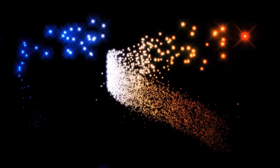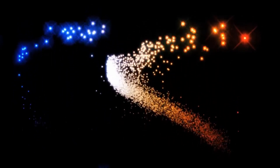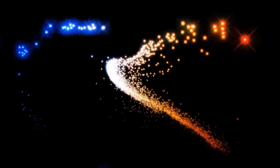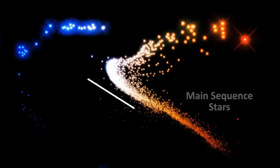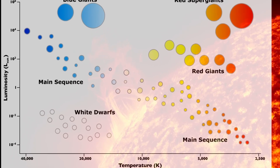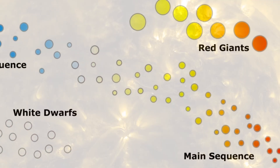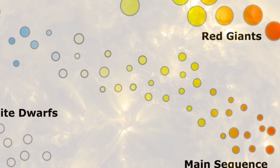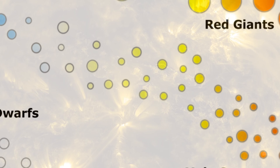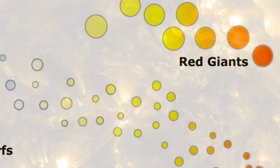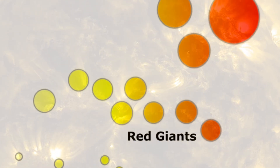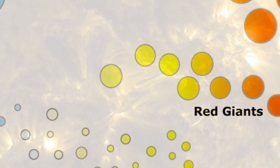Surprisingly, stars on this diagram are not randomly placed — they form well-distinguished regions. Most stars are located within a diagonal strip running from the upper left corner to the lower right. This strip is called the main sequence, and stars located on it are called main sequence stars. Our Sun belongs to these stars, located in the part corresponding to yellow stars.